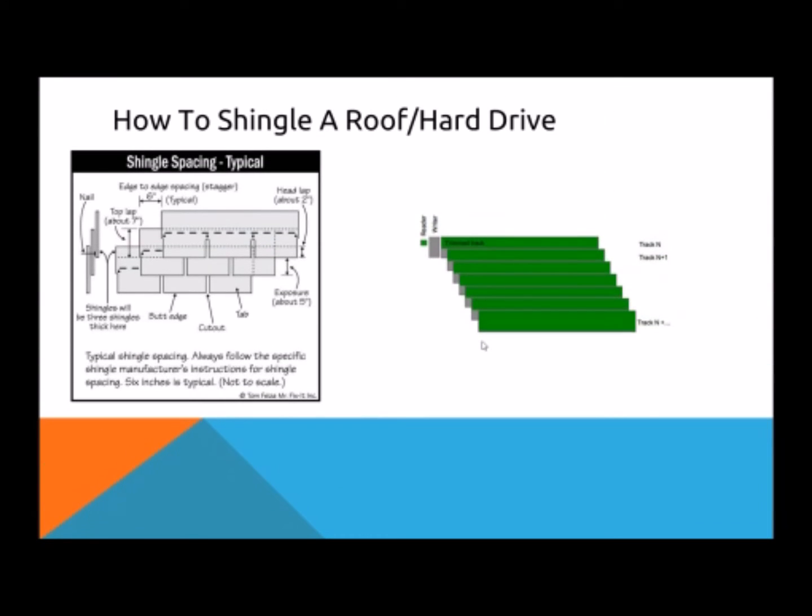SMR technology is aptly named with shingling since they're very similar. For SMR technology, it tries to overlap all of the extra gray wasted space. This causes a layered look just like shingles. And this allows about three times the amount of data to be written in the same area.